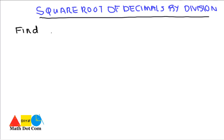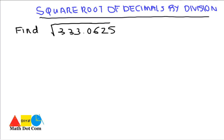Let's see — if you will be asked to find the square root of 333.0625, is it possible for you to find it just by looking at it? Like if you are given √4 you will directly say it is 2. So let's apply the division method on finding the square root of decimals. Step 1 is: make pairs of the whole number part.